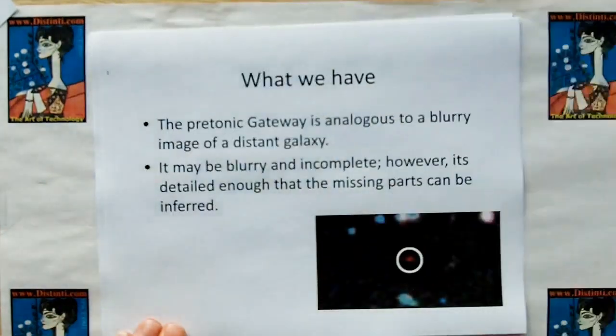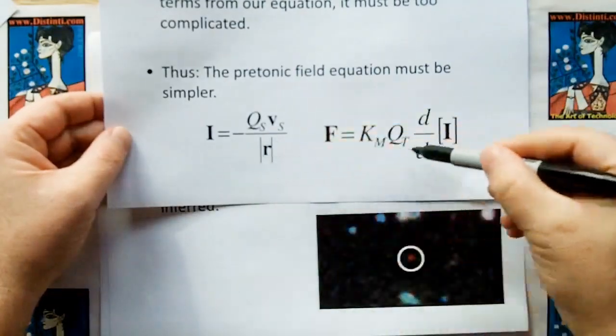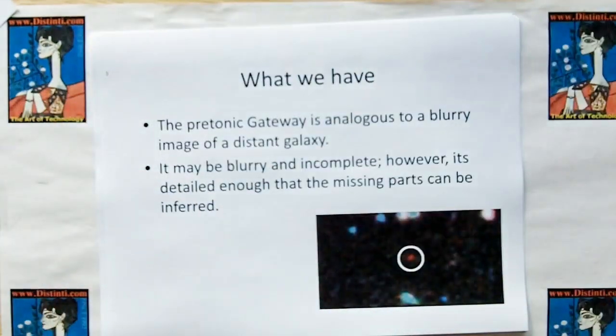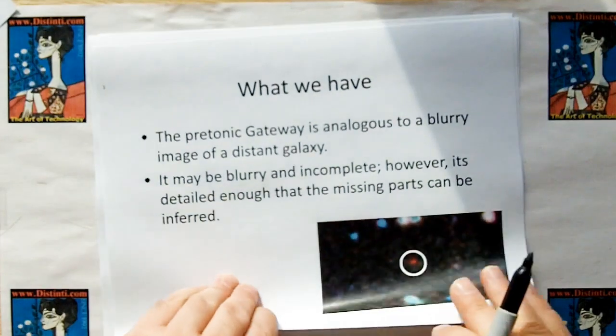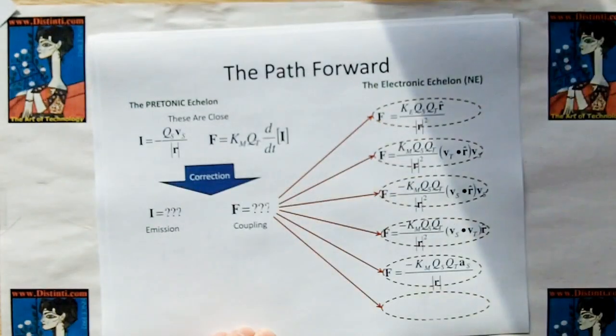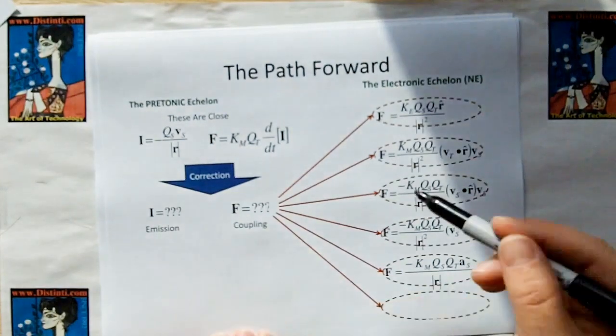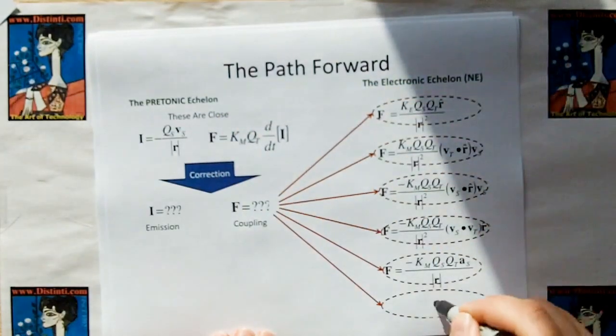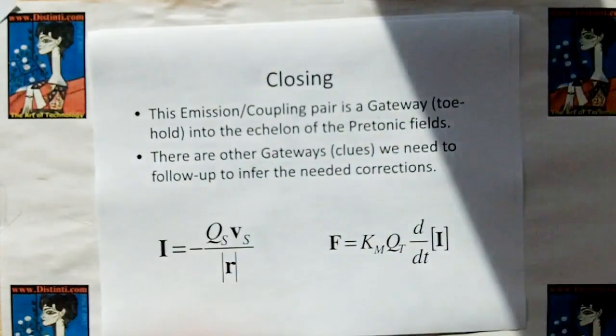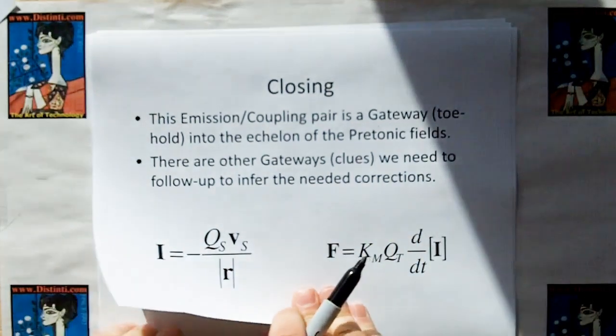This is a blurry image of the true model. Okay? And basically, the way we can analogize this, this pretonic gateway that we're showing you, this model here, which is this, is basically like, you can analogize it as a blurry image of a distant galaxy. It may be blurry and incomplete, however, it's detailed enough that we've got our foot in the door and we can fix the missing parts by using other gateways. And that's essentially what I'm showing here. So, with these models, we're going to apply a correction that we're going to derive using other gateways. We've already split it by emission and coupling, and that should, making it simpler, it's got to be simpler than this, that should explain the five terms plus, if there's anything else, it would explain that too. Okay, but again, this is just a toehold into the echelon of the pretonic field. There are other gateways or clues that we need to follow up to infer the needed corrections.